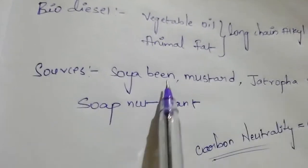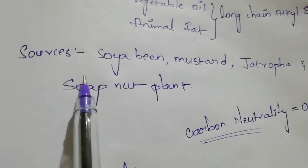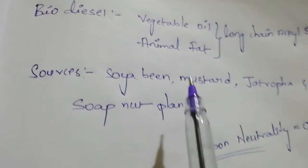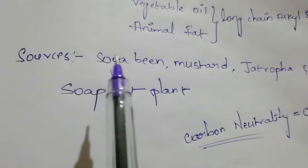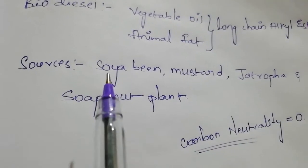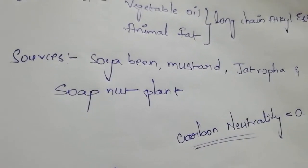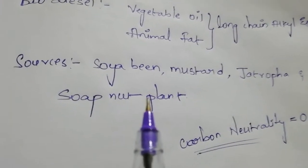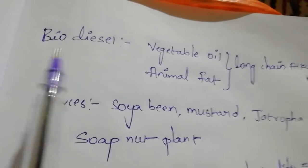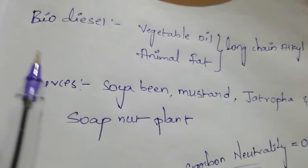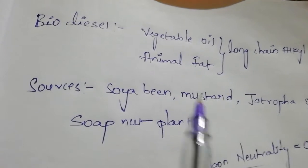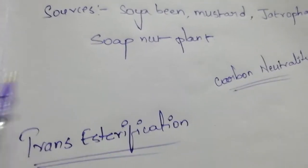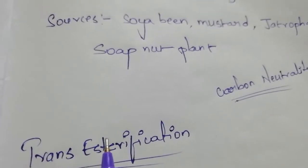The sources of biodiesel include mustard, jatropha plant, and soap nut plant. With the help of these plants, oil is produced, and from that oil we make biodiesel. This process is known as transesterification.